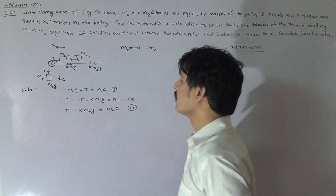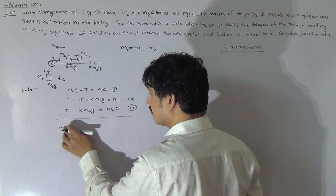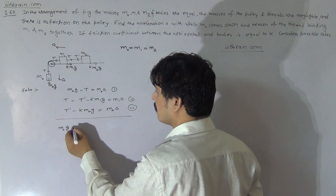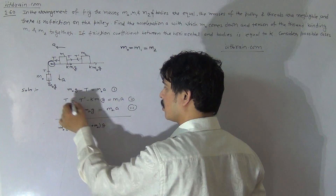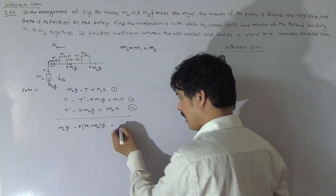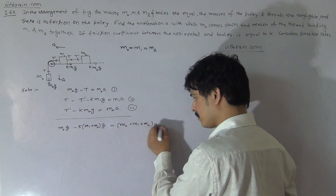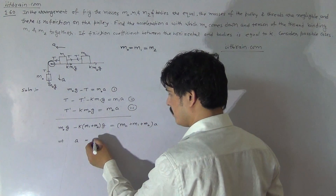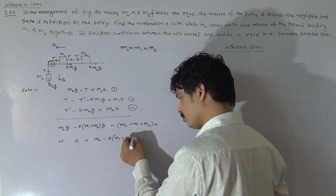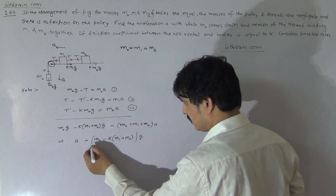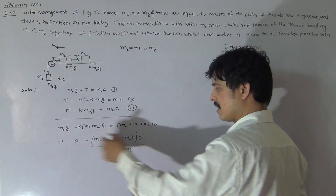The final equation we get will be M0g minus K times (M1 plus M2) times g, because all the tension terms cancel, and on the right-hand side there will be (M0 plus M1 plus M2) times acceleration A. So this implies that the acceleration of the body will be: A equals [M0 minus K(M1 plus M2)] times g, all divided by (M0 plus M1 plus M2). This is the acceleration of the system.